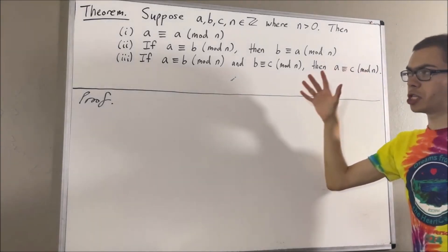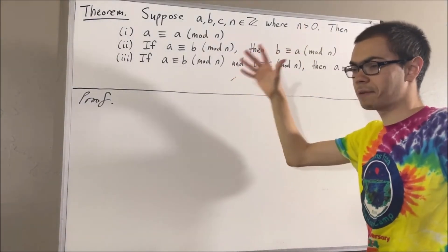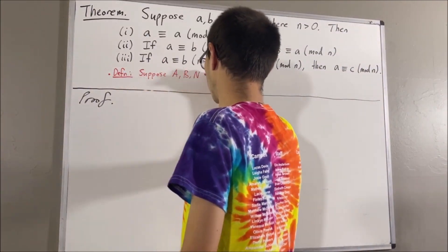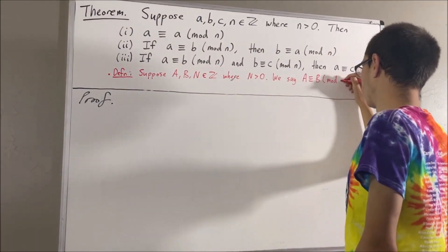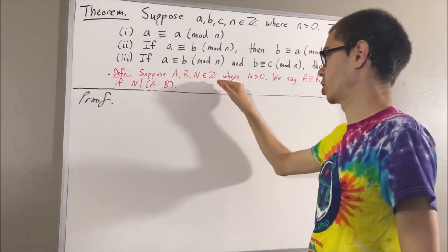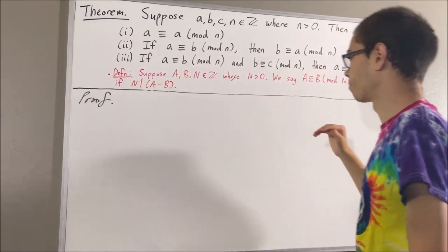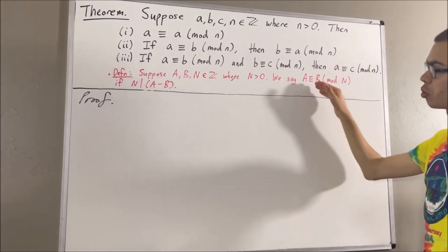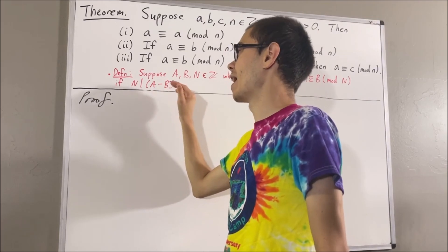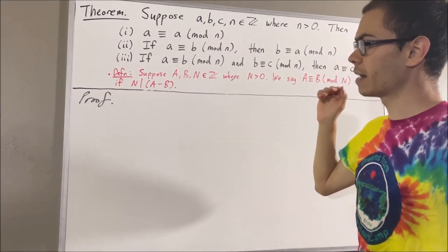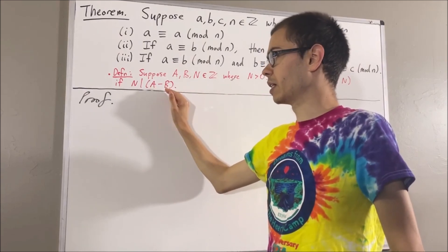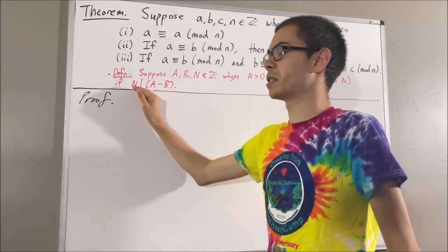Now, our definition of congruence modulo n is as follows. Suppose a, b, and n are integers, where n is greater than 0. We say a is congruent to b modulo n if n divides a minus b. And to say that n divides a minus b means a minus b is equal to n times some integer.